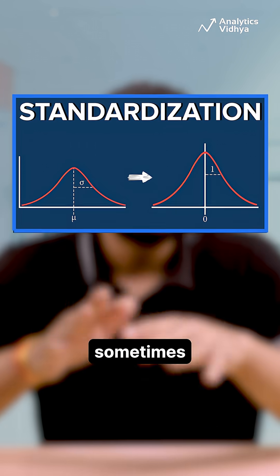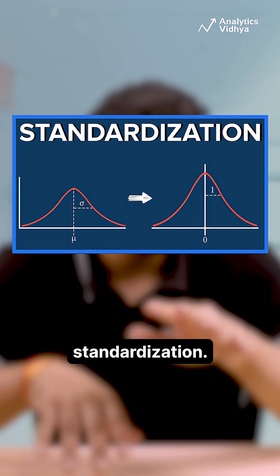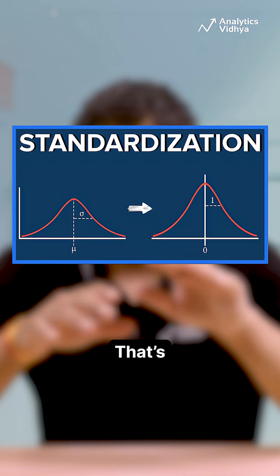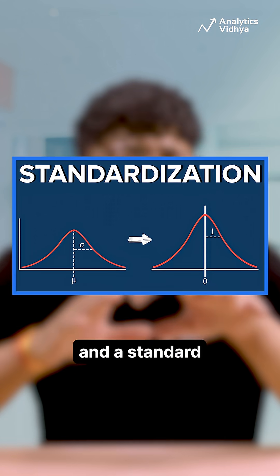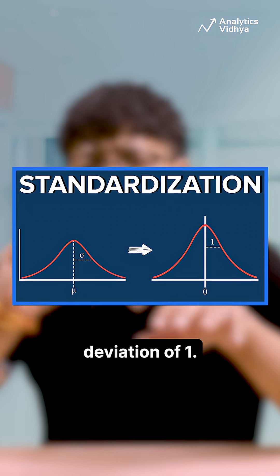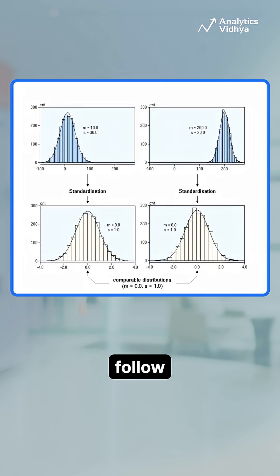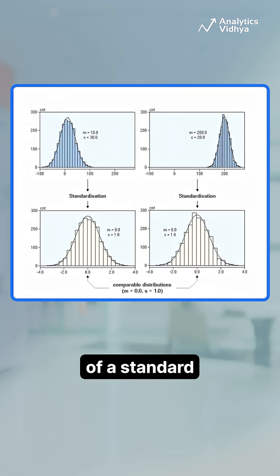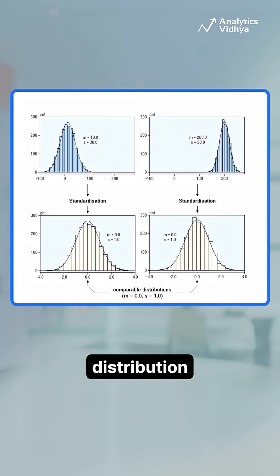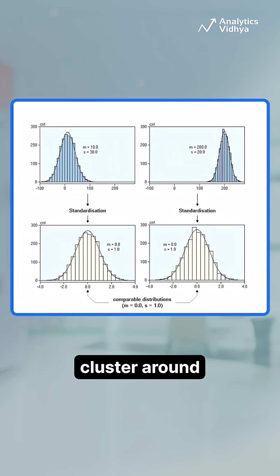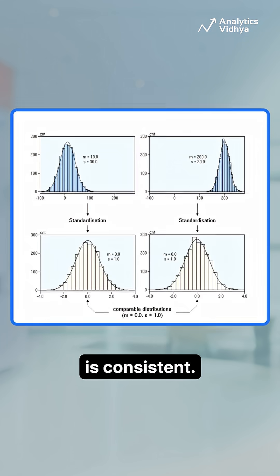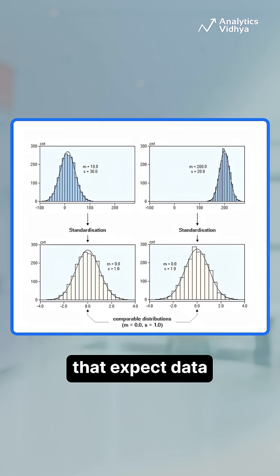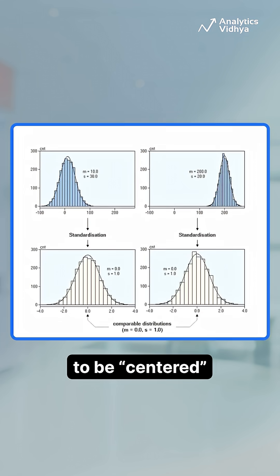But sometimes you might also hear about standardization. That's when you shift your data so it has a mean of 0 and standard deviation of 1. This process makes your data follow properties of standard normal distribution, where most values cluster around the center and the spread is consistent. It's perfect for algorithms that expect data to be centered and normally distributed.